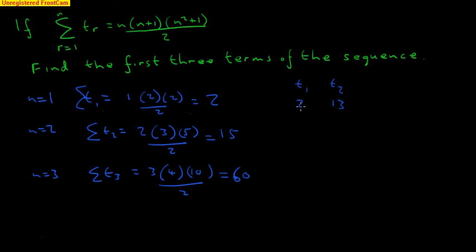The sum to the first term is 2. The sum to the second term is 15. The third term, we now have to get to 60. So if we've got the sum to the first 2 is 15, then the next term must be 45, because 15 plus 45 makes 60.